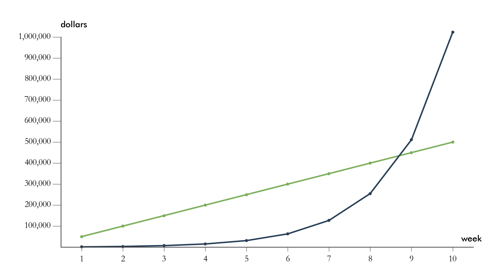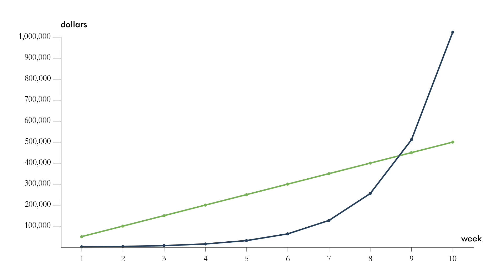Now let's change the y-axis to what the math folks call a log scale. On this scale, a constant shift along that axis means multiplying by a factor. On the labels, you see that it goes from $1,000 to $10,000 to $100,000 to $1,000,000. Traveling a constant amount along the y-axis means multiplying, not adding, by a constant factor. The money from option B is approximately a straight line, and a straight line on this type of plot means exponential growth at a constant rate — approximately doubling every week.